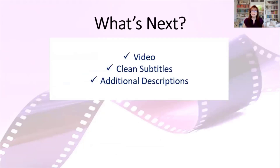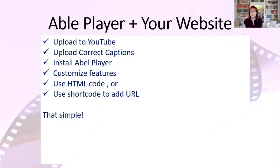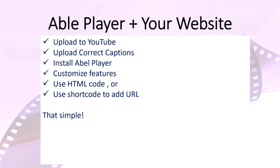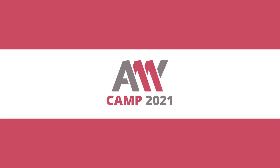So what's next for you? You have a video, you've cleaned up the captions or subtitles, and you've added additional descriptions. Upload your video to YouTube, upload the correct caption file, install AblePlayer on your WordPress site, customize the features, and then use either HTML code in the block or a shortcode to add the YouTube URL and publish. Now you have an accessible video on your WordPress website. It's that easy. AlleyCap 2021.